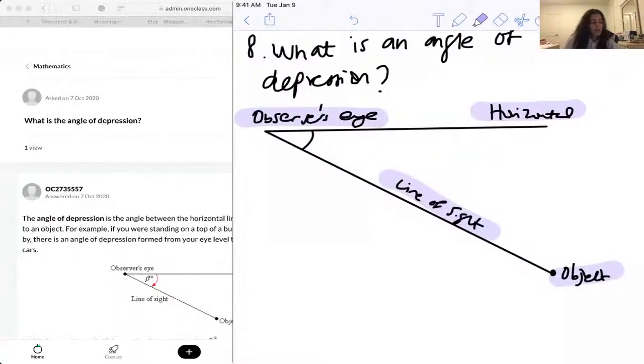So for example, you're standing at the top of a building, and you're asked to look down at a traffic light or a cab. The cab will be the object.